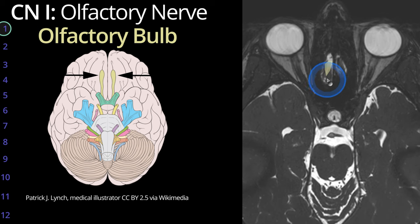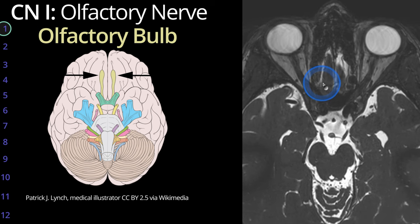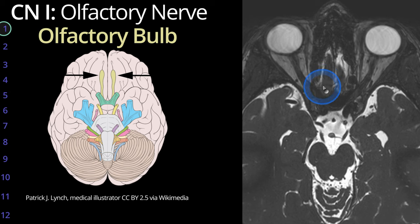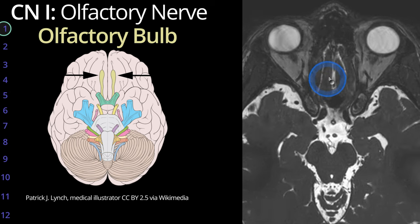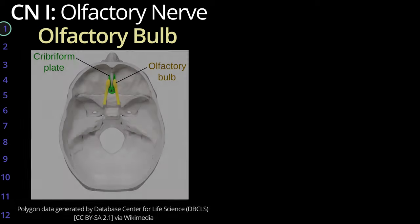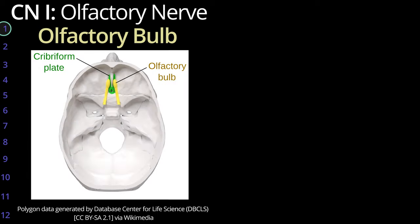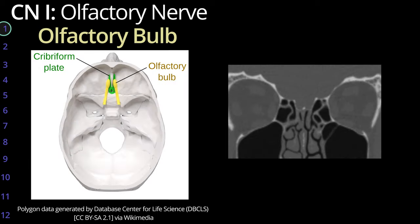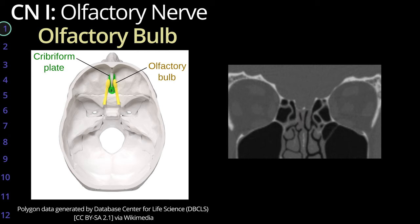The more posterior course of the olfactory tract is not well visualized at this resolution of imaging. This nerve sits immediately above the cribriform plate, which is better visualized by CT, and is responsible for the sense of smell.